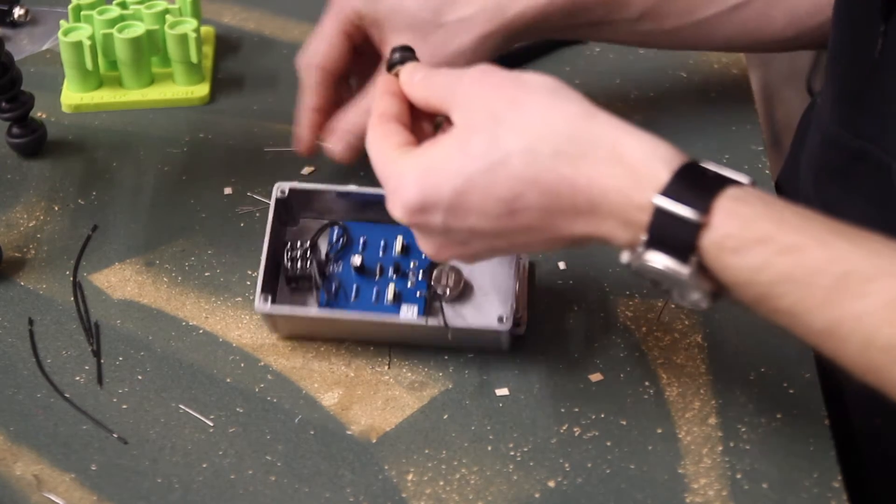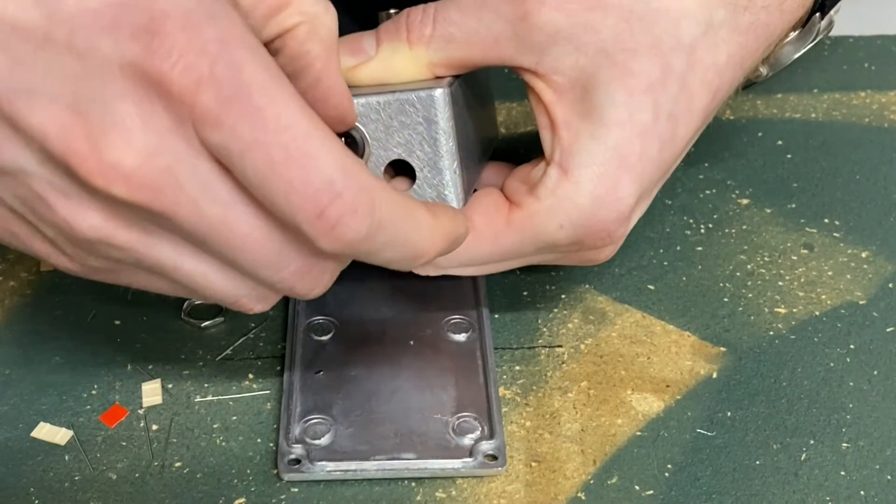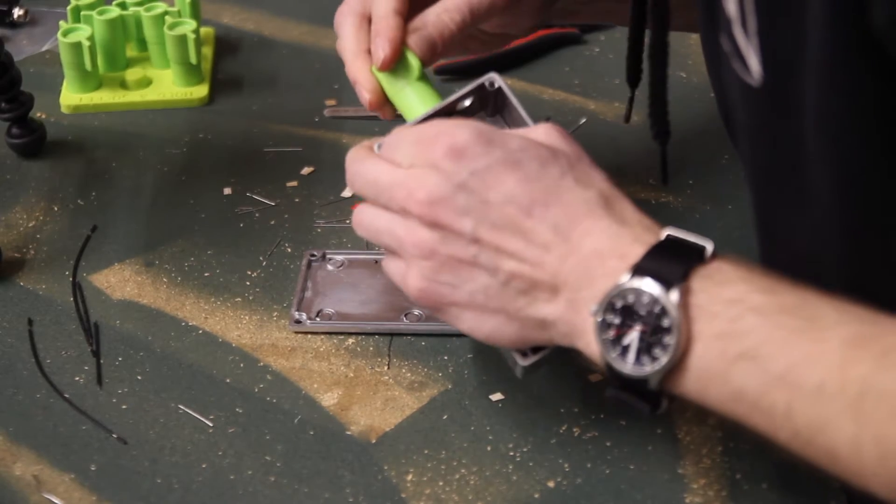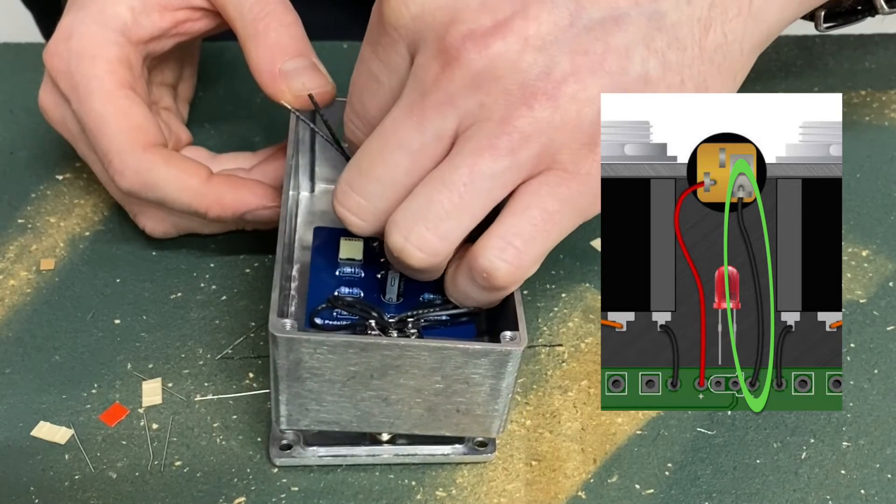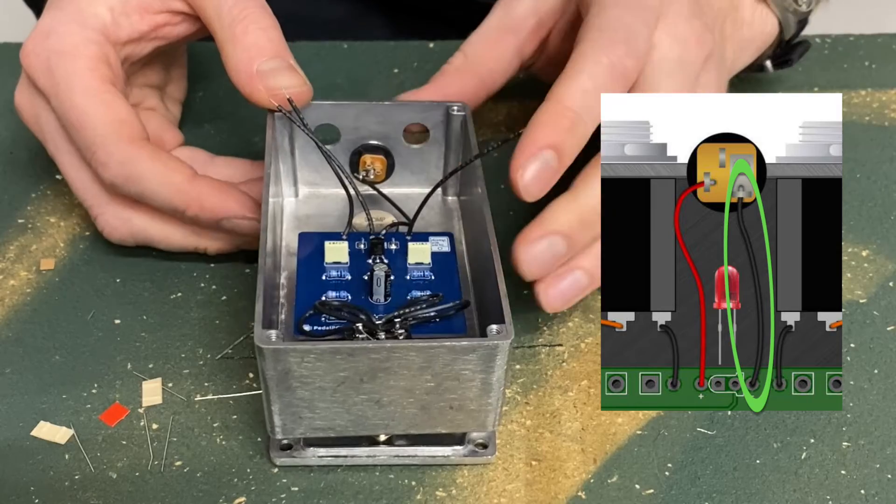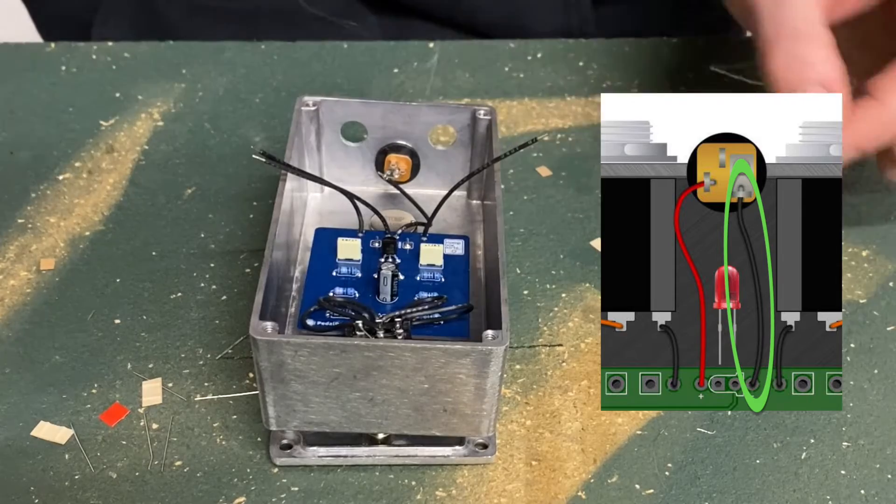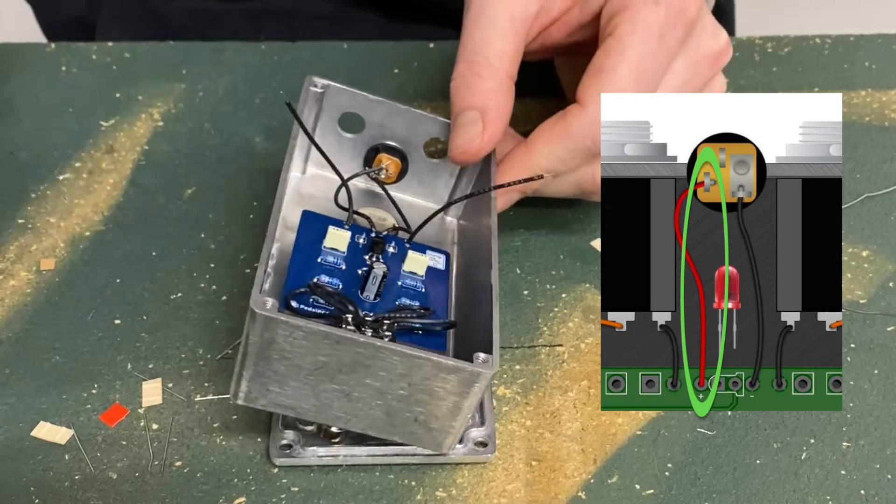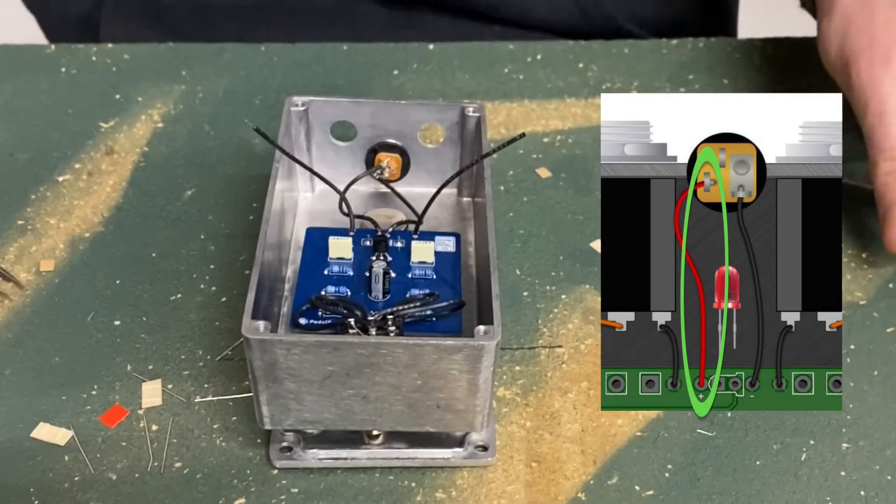Grab the DC jack, remove the hardware, but leave on the star washer, and install the jack from the inside of the pedal. Put the flat washer back on, and tighten down the nut. Take the negative power wire coming from the minus pad, and poke it into the lug for the center pin of the DC jack. That's this wire and lug on this diagram. Solder it in while being mindful of other nearby wires. Feel free to bend them out of the way if you need. Now, do the same thing with the positive or plus power wire. Poke it into the lug on the power jack right here, and solder it in.